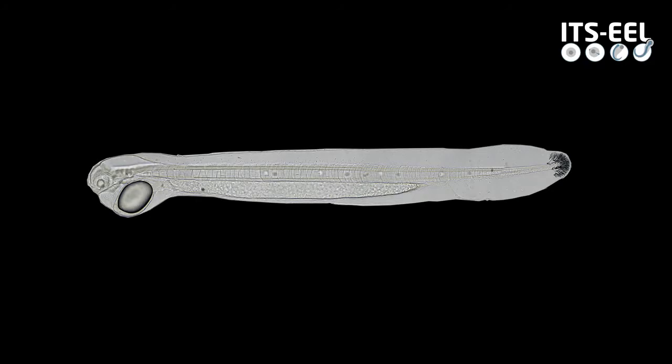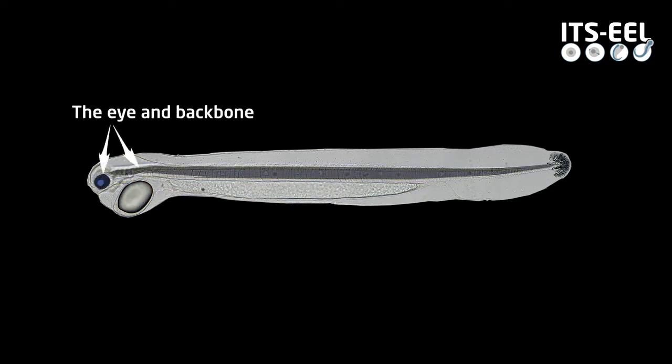The hatched larvae initially depend on a nutrient package transferred from the mother in form of a yolk sac, including an oil droplet. The oil droplet, often mistaken for an eye, is shown here in red. The oil droplet acts not only as nutrition, but also enhances buoyancy. The real eye, that is still undeveloped at hatch, is indicated here in front of the backbone.